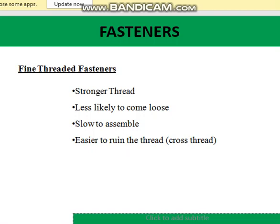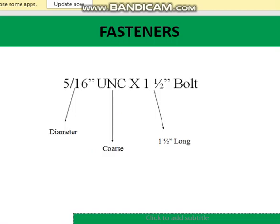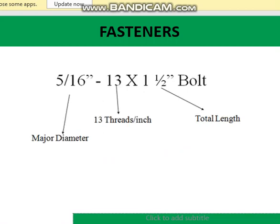Fine threads are easier to cross-thread — it's very easy to get a cross thread. There is some standardization involved in the creation of fasteners. If you see a mixture of numbers and letters, the first one means the diameter, UNC means the coarse type, and the last part is the length. So the three main parameters are: the diameter, the length, and the type — coarse or fine. Coarse means the number of threads per distance is less.